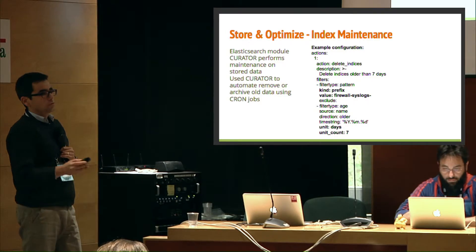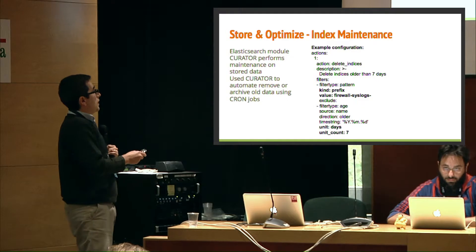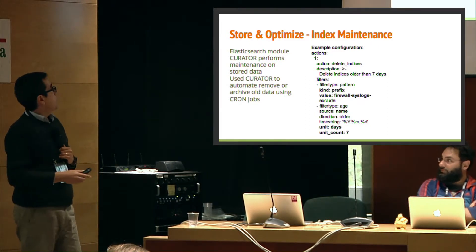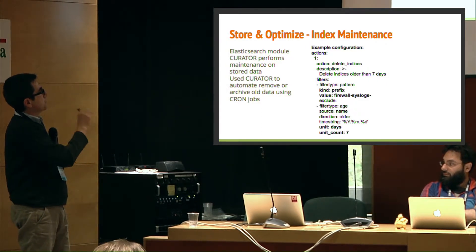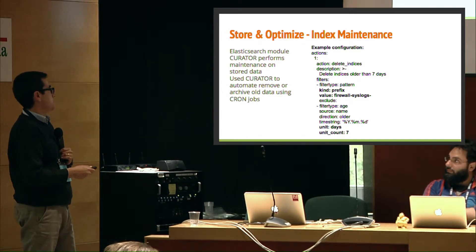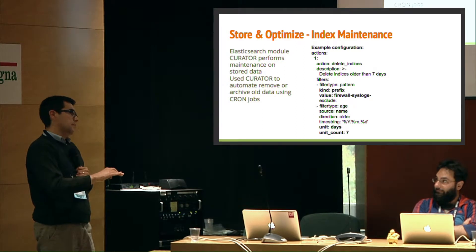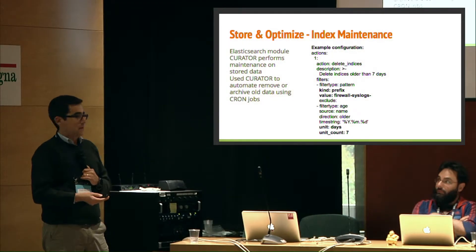When data grows too much, we use another component called Curator. Curator runs as a process with cron jobs to schedule maintenance activities. We configure it per index type to specify how many days to keep data. Indexes can be kept active — where the system continuously indexes and takes resources — put on hold, leaving data but making it unavailable for searching, or deleted to save space. All of this is done automatically.